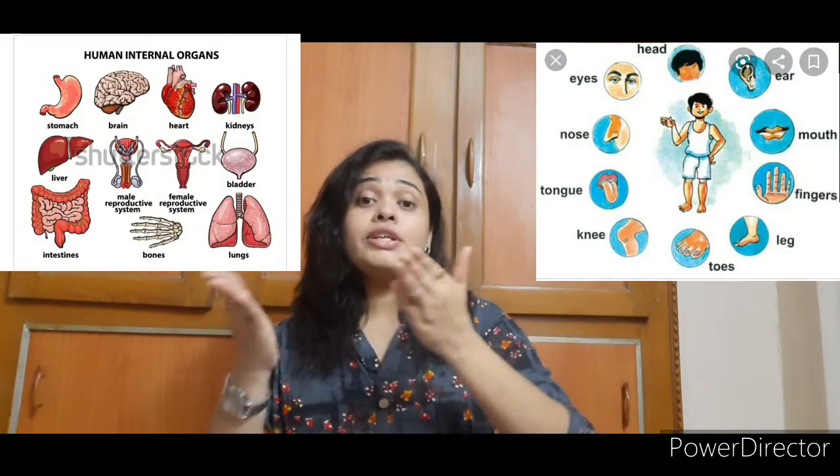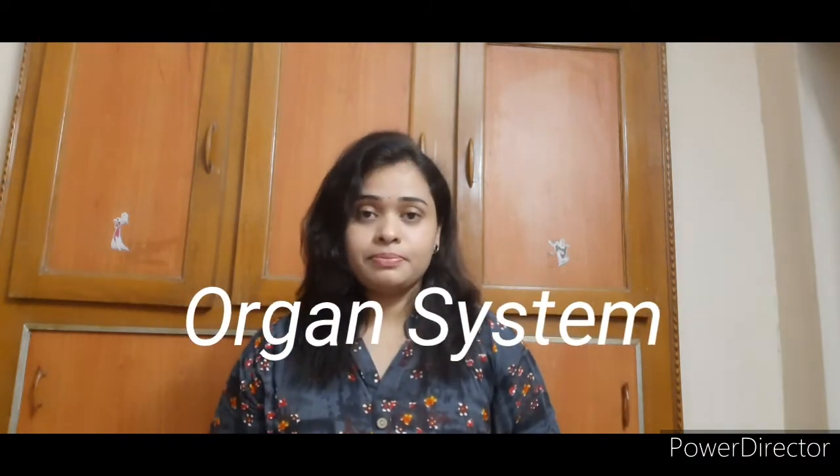A group of cells together form a tissue. A group of tissues together form an organ. There are many organs in our body — some are external and some are internal. Each and every organ performs its own function. A group of organs together form an organ system. Mainly there are eight organ systems in our body: the skeletal system, the muscular system, the respiratory system, the nervous system, the circulatory system, the reproductive system, the digestive system, and the excretory system.